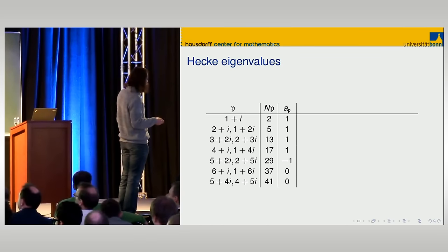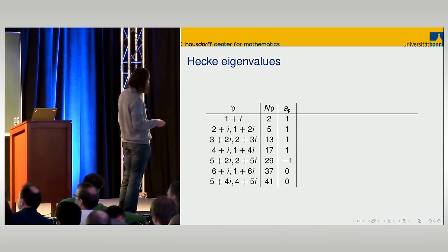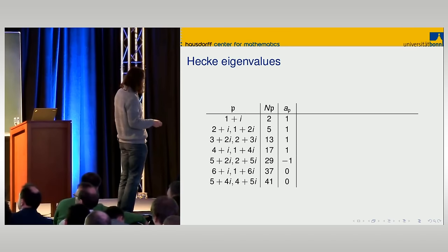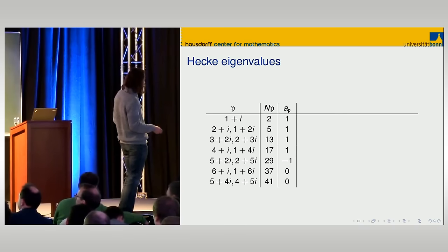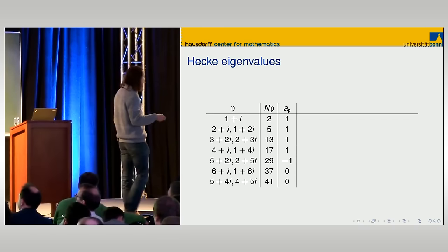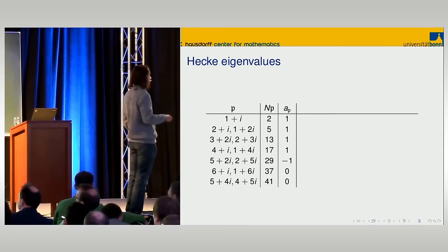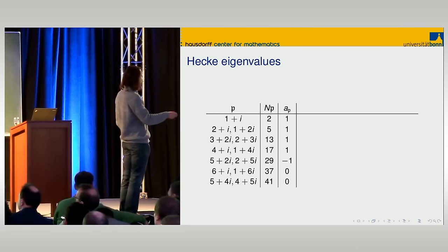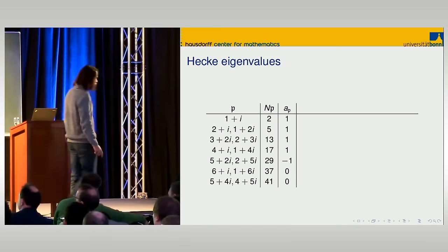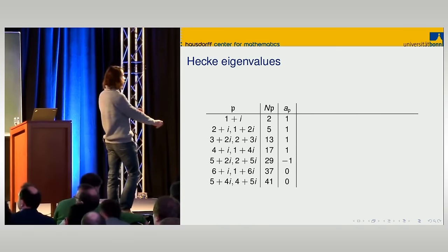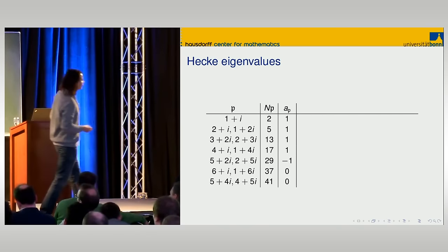This is something you can easily compute on a computer. The primes of Z[i] not dividing 183 — their norms are rational primes. For instance, the norm of 3+2i is 13. Over 2 there's just one prime; over the others there are always two primes. Computing the eigenvalues, it turns out that whenever two primes have the same norm, the eigenvalue is the same. You get a sequence: for any prime, you get 0, +1, or -1.